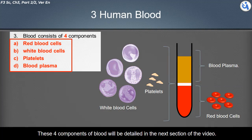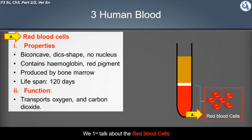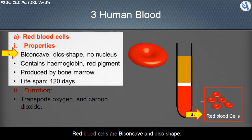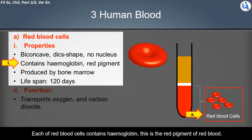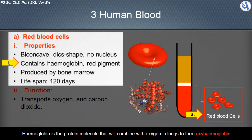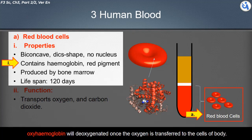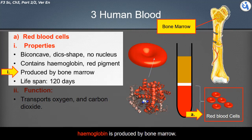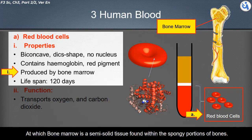Red blood cells are biconcave and disc-shaped. They are cells without a nucleus. Each red blood cell contains hemoglobin, the red pigment of blood. Hemoglobin is the protein molecule that combines with oxygen in the lungs to form oxyhemoglobin. Oxyhemoglobin will be deoxygenated once the oxygen is transferred to the cells of the body.